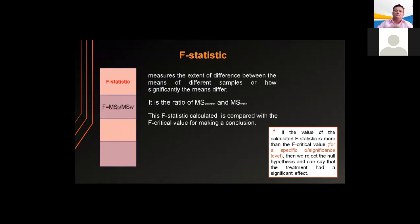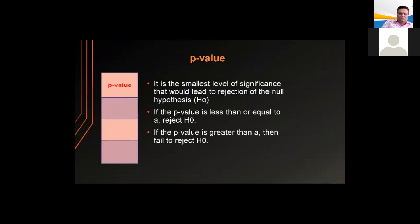The F-statistic calculated is compared with the F-critical value. If the calculated F-statistic is greater than the F-critical value for a specific alpha or significance level, we reject the null hypothesis and can say the treatment had a significant effect. The p-value is the smallest level of significance that would lead to rejection of the null hypothesis. If the p-value is less than or equal to alpha, reject the null hypothesis; if greater than alpha, fail to reject.